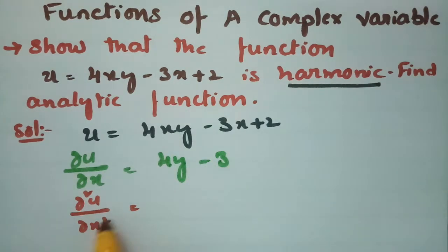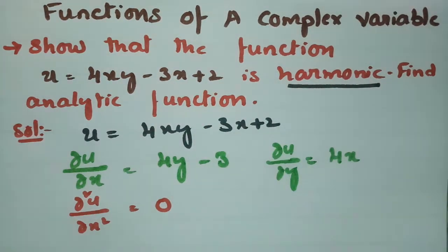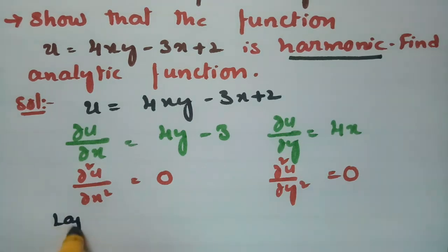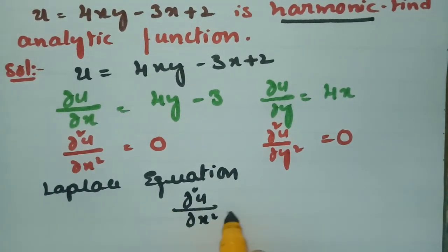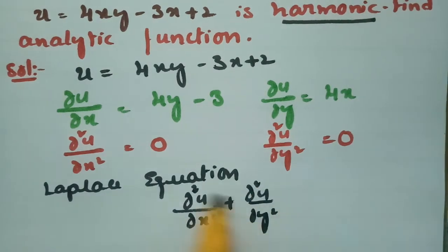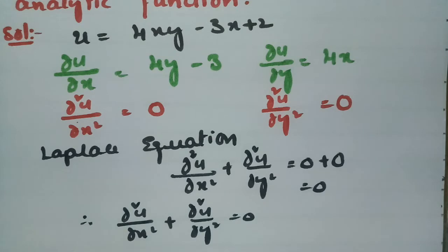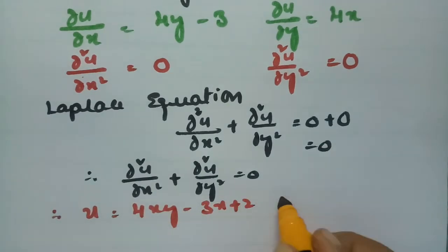Next, we take the derivative with respect to y: ∂u/∂y = 4x, since the other terms are constants. Differentiating again with respect to y gives ∂²u/∂y² = 0. Substituting into the Laplace equation: ∂²u/∂x² + ∂²u/∂y² = 0 + 0 = 0. Therefore we conclude that u = 4xy - 3x + 2 is harmonic.